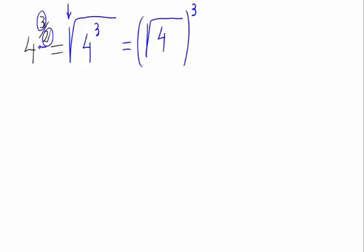The square root of 4 is 2. Be careful — somebody could say that it's plus or minus 2. But it is just plus 2, because this is not an equation where we would write plus or minus. As here we do not have any sign before, we write it as plus.